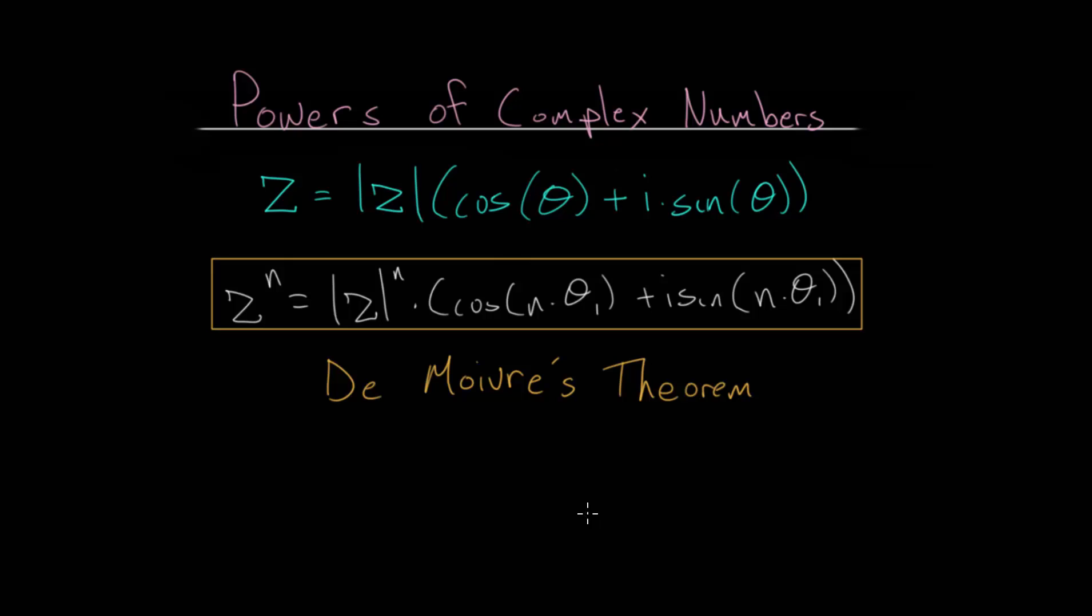And we were able to derive this formula known as De Moivre's theorem, where when we raise a complex number to the nth power, we take its magnitude and raise that to the nth power, and we multiply its angle by n.